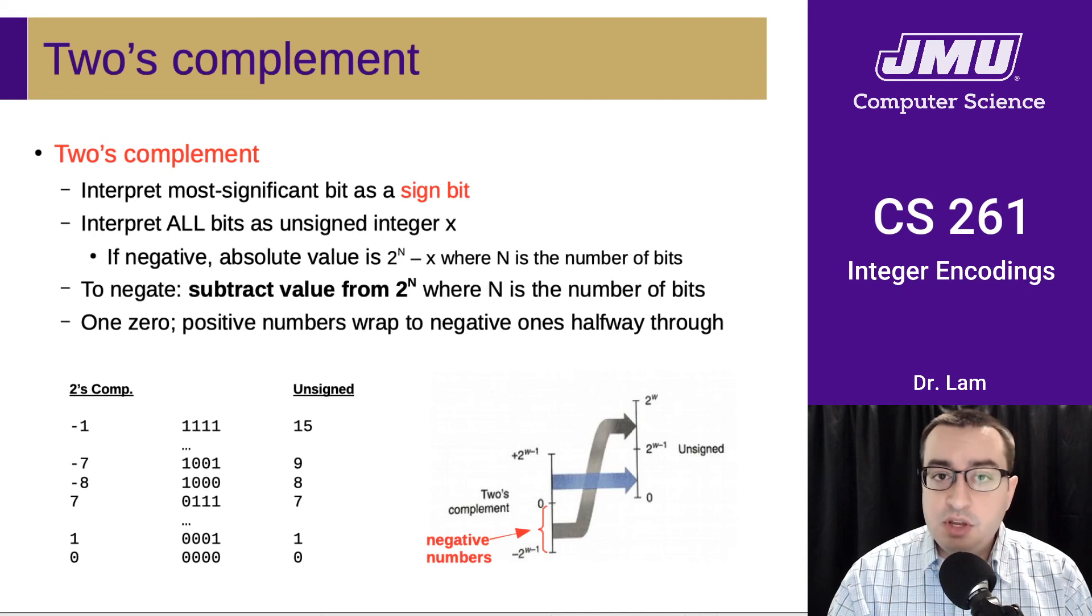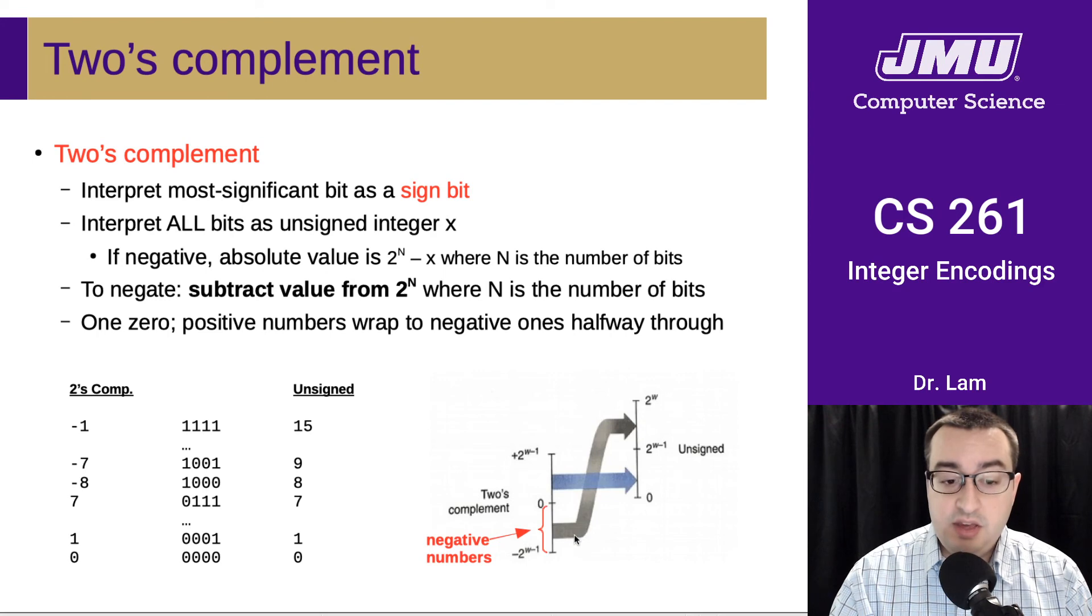What's somewhat confusing about how this is laid out is that it kind of causes the numbers to wrap around in the middle. And what you've essentially done is you've taken the negative number space and you sort of slid it up into the positive number space.